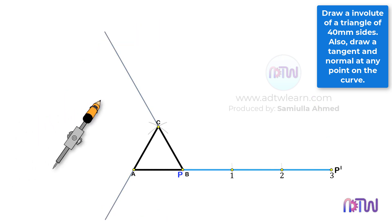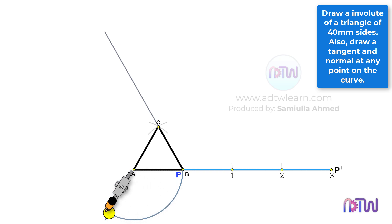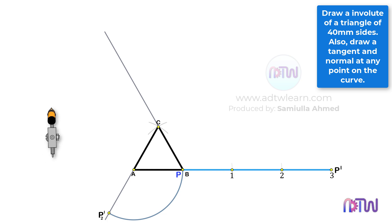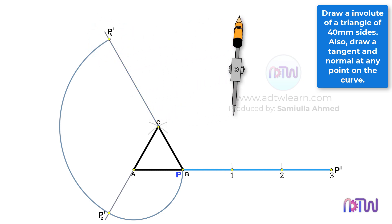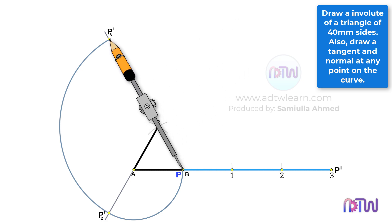Take a compass and adjust it to length AB. Using point A as a center, draw an arc from point B up to this line. Label this point as P2'. Next, adjust the compass to the length between points C and P2', and using point C as a center, draw an arc from point P2' up to this line. Label this point as P3'. In the end, adjust the compass to the length between points B and P3', and using point B as the center, draw an arc from point P3' up to this horizontal line.